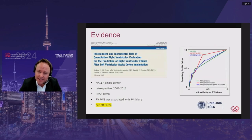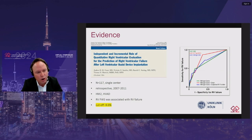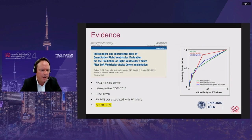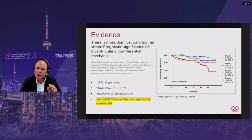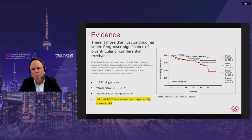The outcome investigated, the strain measure used, and the patient population determine the different cutoffs. Looking at LVAD implantation, the cutoff for global longitudinal strain is much lower than for a heterogeneous cardiac surgery population. Notably, not only RV longitudinal strain but also RV circumferential strain predicts outcome in cardiac patients, as shown by a recent retrospective study from Budapest including more than 350 patients.